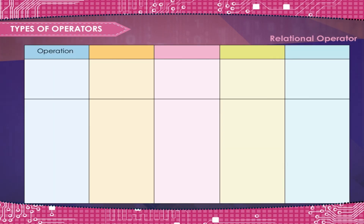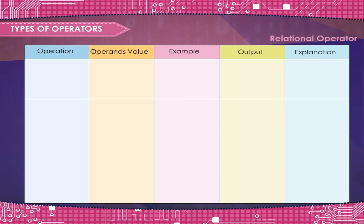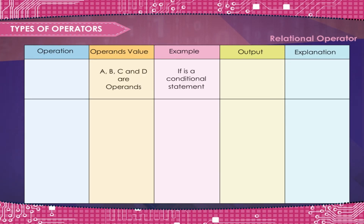Operator, operand value, example, output, explanation. A, B, C and D are operands. If is a conditional statement.